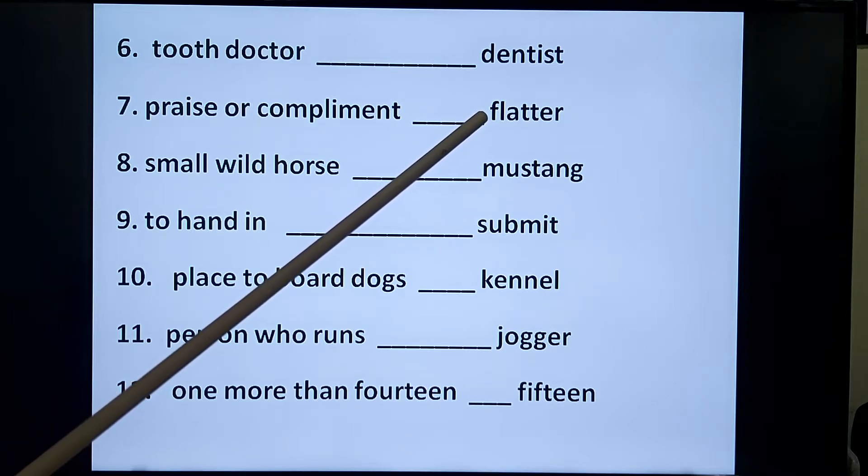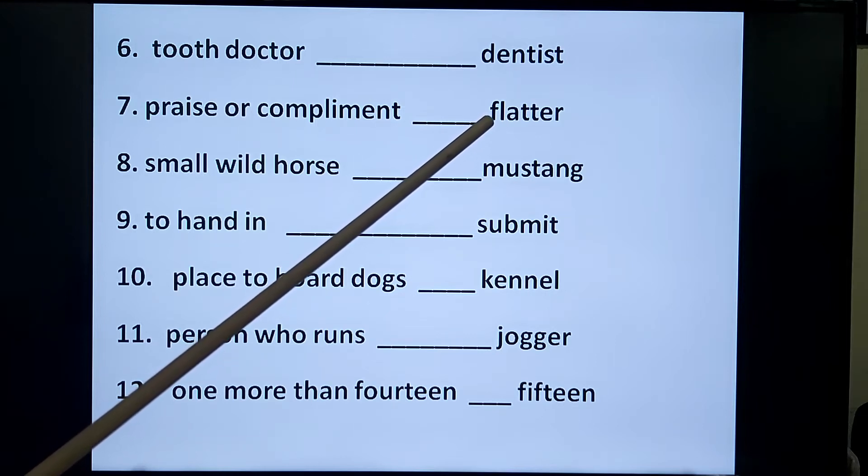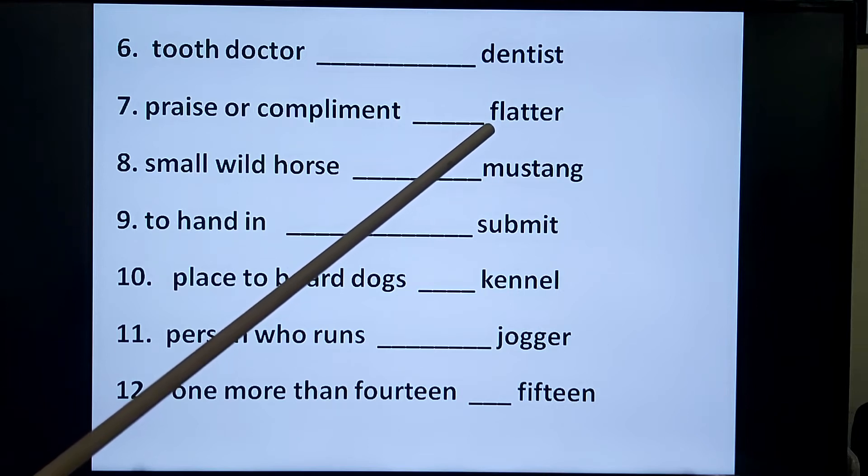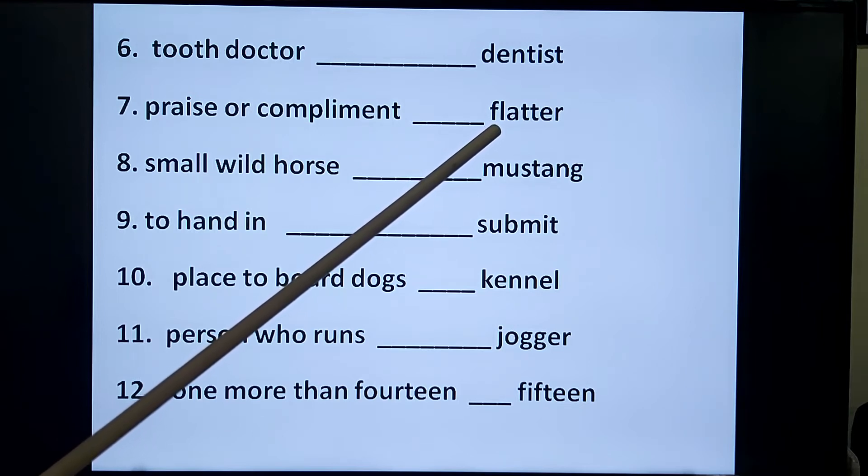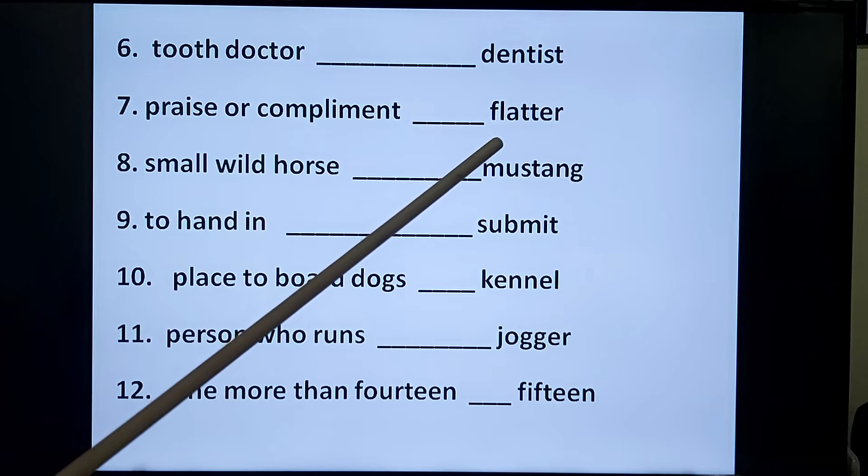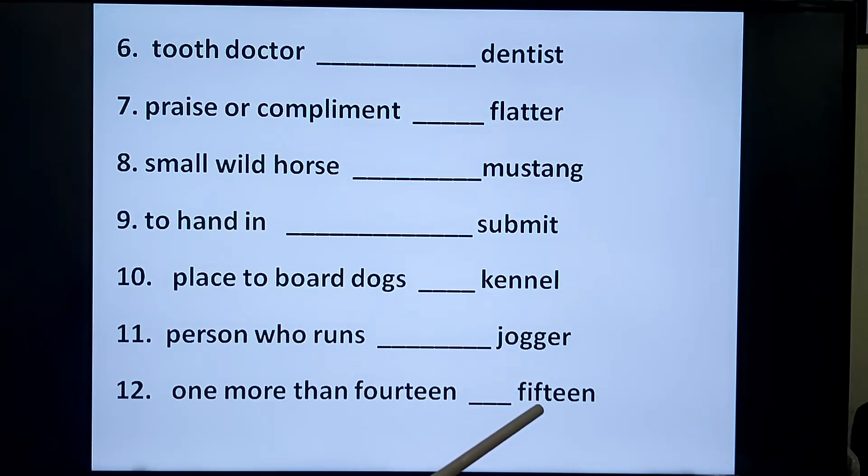Word number ten: place to board dogs, kennel. Kennel is a place where people keep dogs, K-E-N-N-E-L. Word number eleven: person who runs. Jogger is a person who runs, J-O-G-G-E-R. It's quite simple, I hope most of you know. Word number twelve: one more than fourteen, and it's quite simple, fifteen.